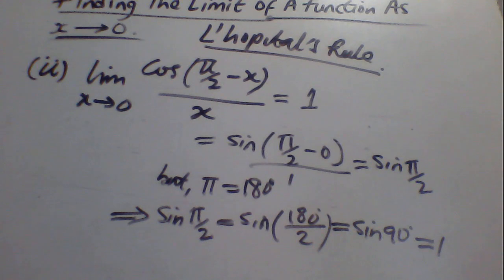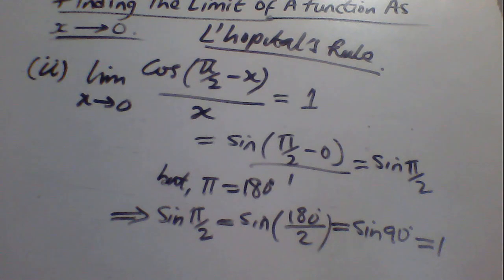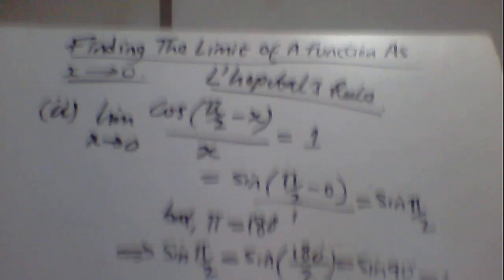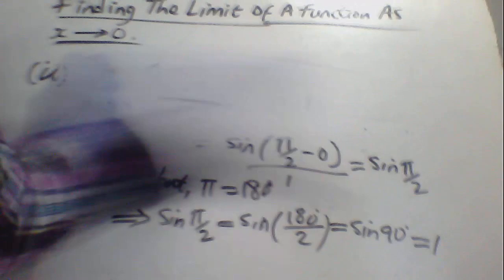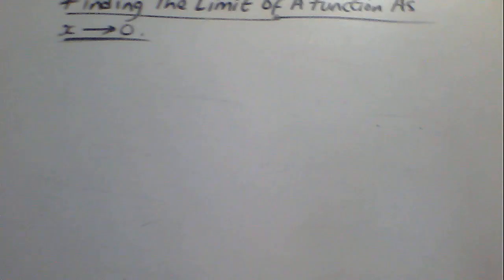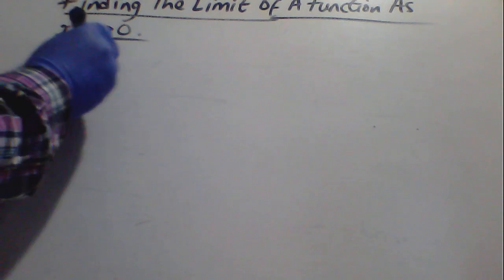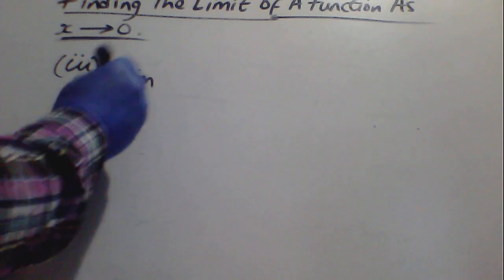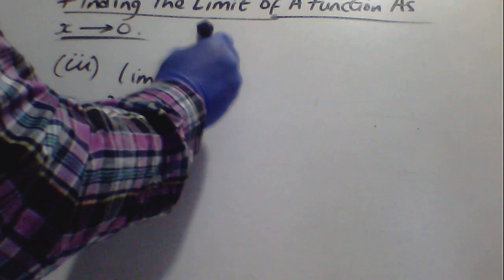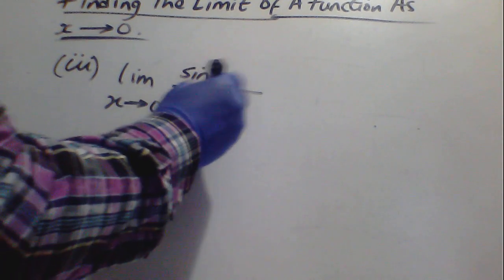So we have solved a problem involving series and also solved a problem involving the derivatives of individual terms — numerator and denominator — that make up the given expression. Let us look at the third question. You are required to find lim(x→0) of sin(2x) divided by 2x² + x.